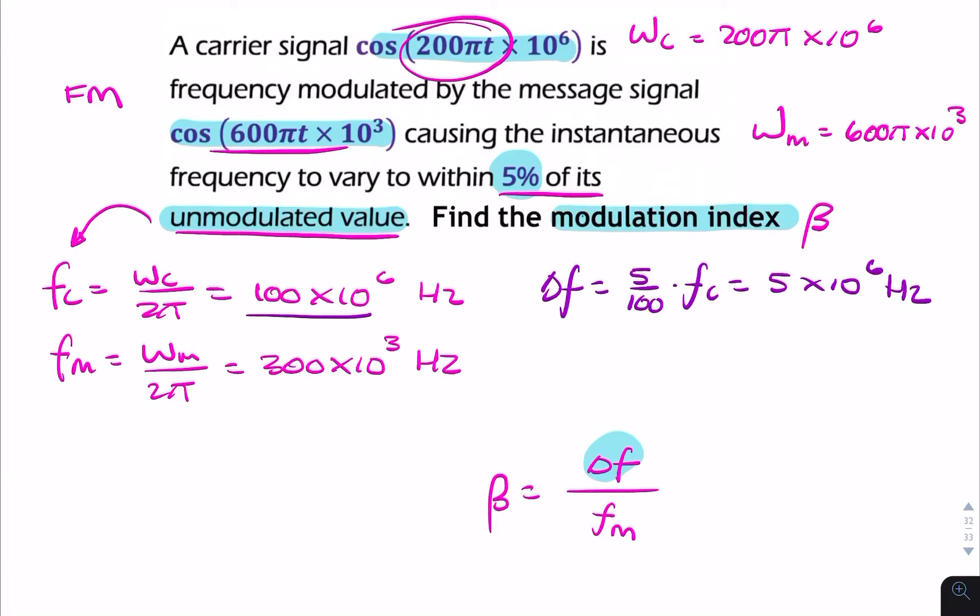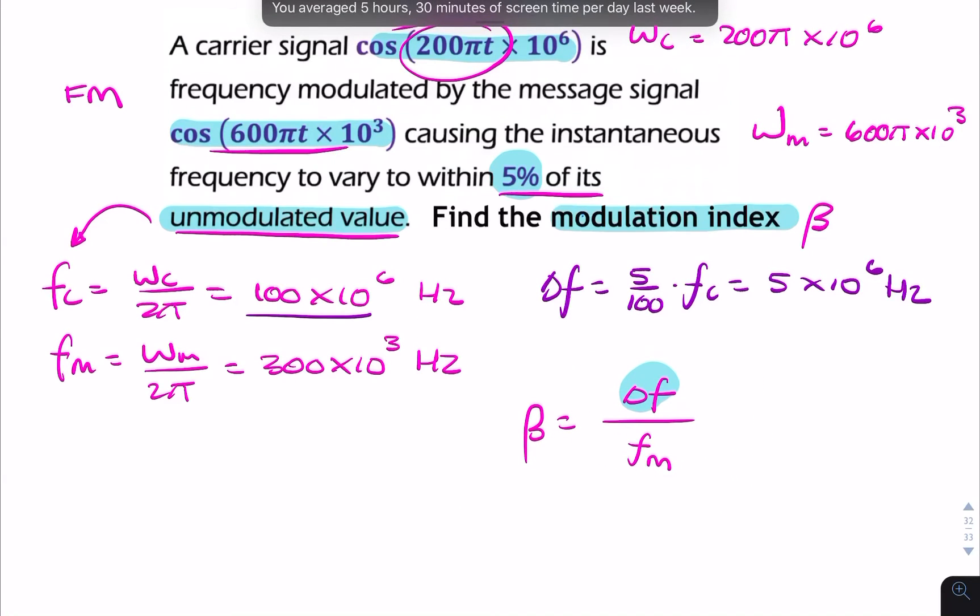So now calculating beta is simply a case of finding that ratio. So we divide 5 times 10 to the power 6 divided by 300 times 10 to the power 3. And if you put that in your calculator, you get 16.7.